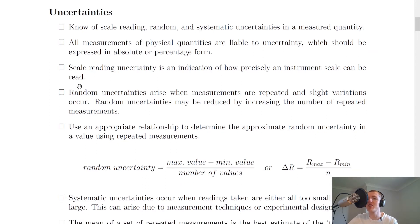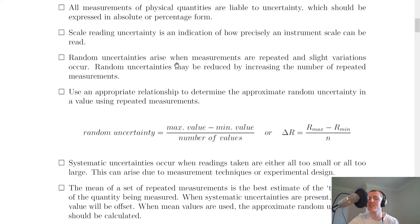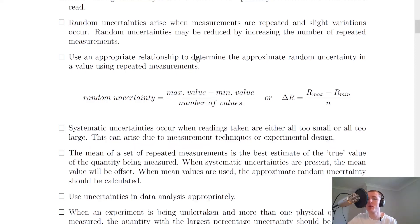Scale reading uncertainty, you should know, is an indication of how precisely an instrument's scale can be read. You should also know that random uncertainties arise when measurements are repeated and slight variations occur. Random uncertainties may be reduced by increasing the number of repeated measurements. You should also be able to use an appropriate relationship to determine the approximate random uncertainty in a value using repeated measurements.